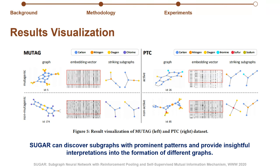We study the power of our model to discover subgraphs with prominent patterns. This figure illustrates the graph instance after subgraph selection, the neural outputs, and the striking subgraphs found by our model on the MUTAG and PTC dataset. Take MUTAG as an example: we observe that the main determinant in the mutagenic class is the nitro group connected to a set of carbons. For the non-mutagenic class, our model takes a chlorine connected to carbons as a striking subgraph. The visualization results show that SUGAR can discover subgraphs with prominent patterns and provide insightful interpretations into the formation of different graphs.